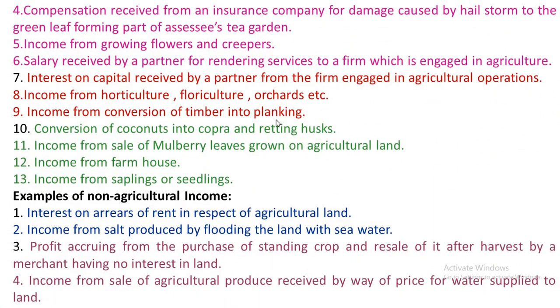Number 4 — Compensation received from an insurance company for damage caused by a hail storm to the green leaf forming part of the assessee's tea garden shall be treated as agricultural income.